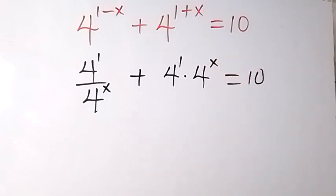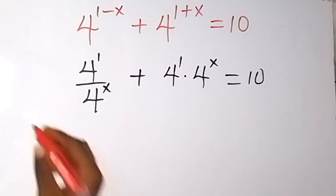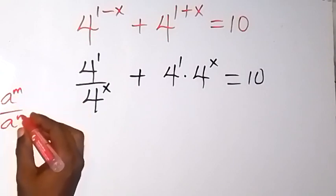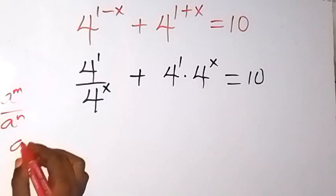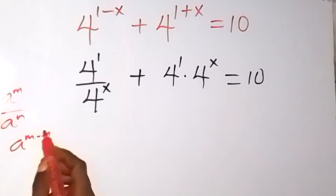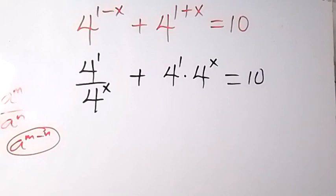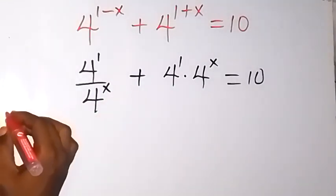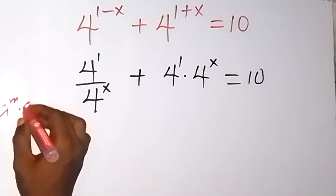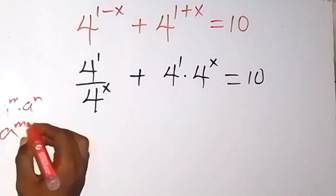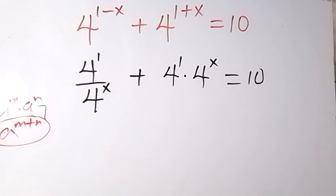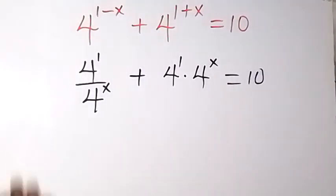We have applied the law of indices. When we have something of the form a raised to power m divided by a raised to power n, we can write it as a raised to power m minus n. Also for multiplication, when we have a raised to power m times a raised to power n, we can write it as a raised to power m plus n. So the expression has been split accordingly.